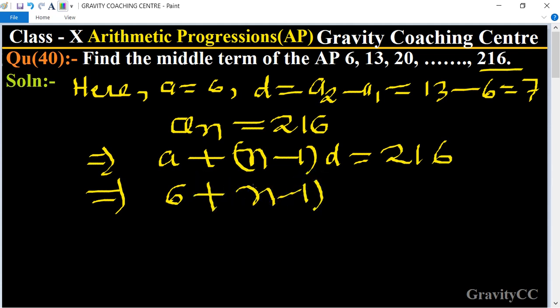And value of a is 6 plus n minus 1 and d equal to 7 equal to 216.